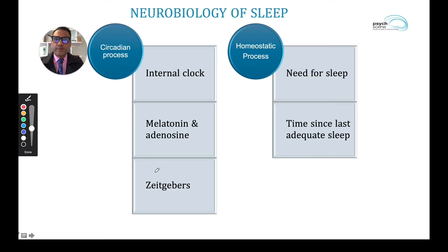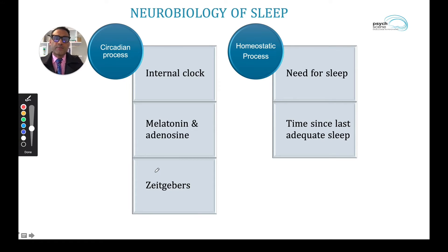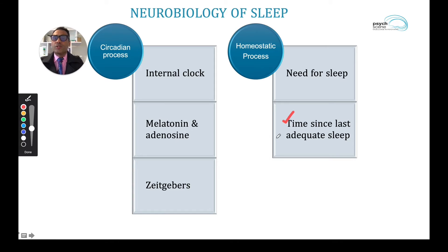Zeitgebers include sleep-wake routine, physical activity, eating, and light is a very important Zeitgeber. Blue light tends to be a very important Zeitgeber, which has positive and negative consequences. The homeostatic process, on the other hand, is really the need or the pressure for sleep, and this is a function of the time since you last had an adequate sleep.